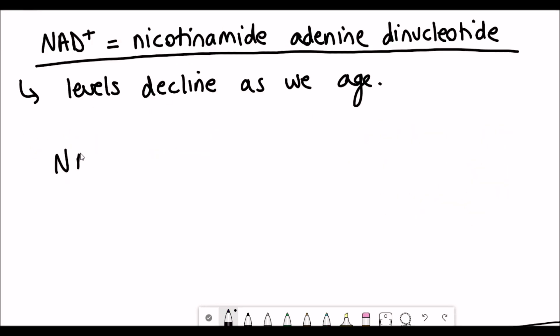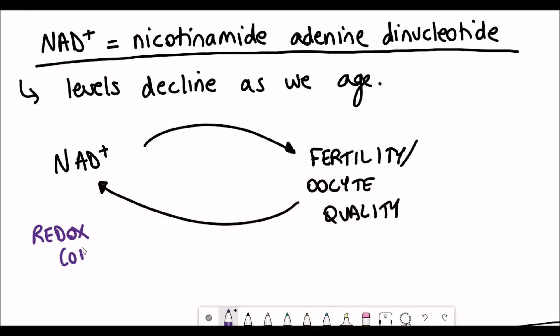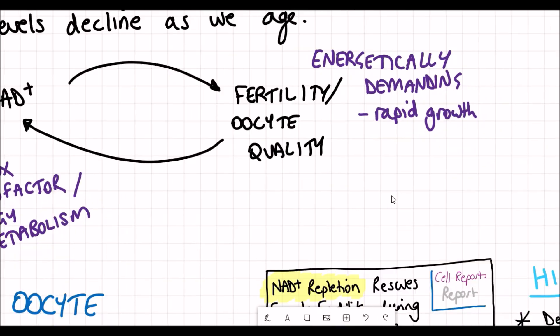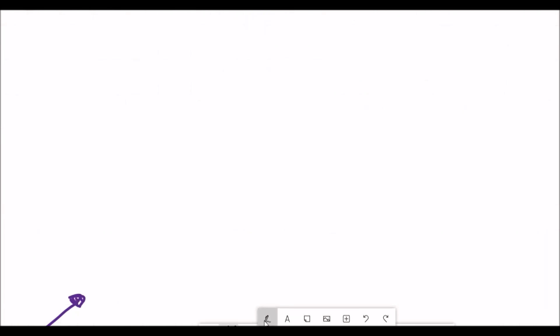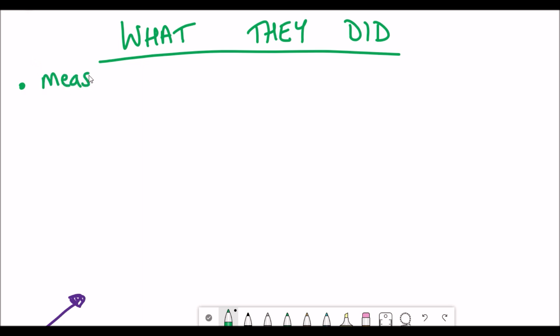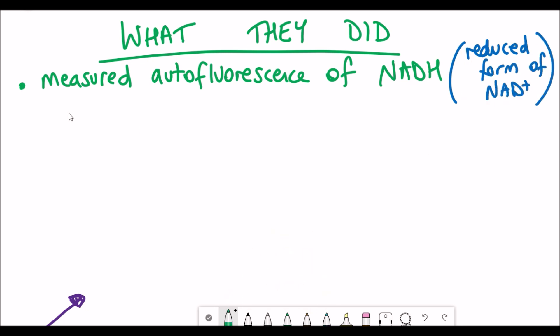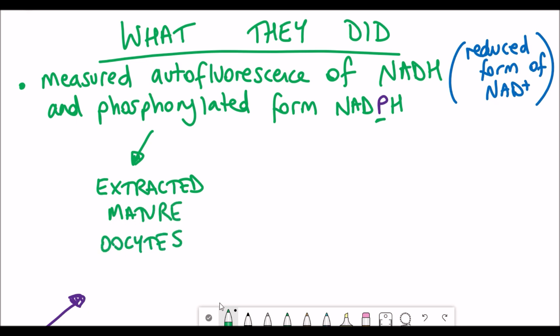There are two main functions of NAD+ that can be categorized into its role as a redox coenzyme and also as a substrate for NAD+ consuming enzymes, including proteins such as sirtuins. Why did the authors decide to look at NAD+ levels? Well, firstly, NAD+ levels are known to decline as we age.